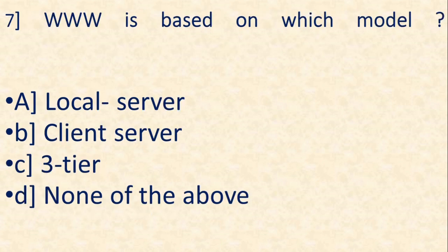Question number 6. WWW is based on which model? And the options are, A, local server, B, client server, C, three tier, D, none of the above. And the correct answer is B, client server.